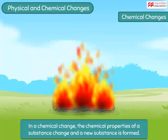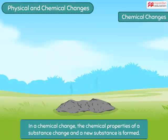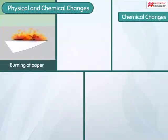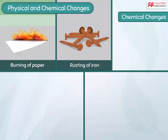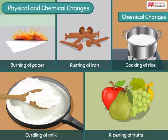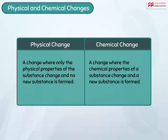Such a change where the chemical properties of the substance change and a new substance is formed is called a chemical change. Chemical changes are mostly irreversible. Burning of paper, rusting of iron, cooking of rice, curdling of milk, and ripening of fruits are chemical changes. So now you know all about physical and chemical changes.